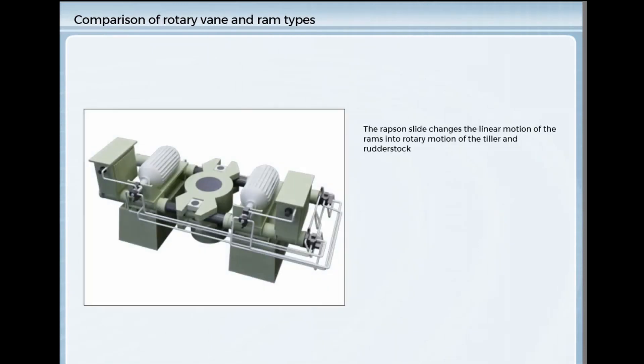In the ram type, the piston or ram is connected to the tiller, often through a Rapson slide, which changes the straight-line motion of the rams into rotary motion of the tiller and rudder stock. This means that ram type steering gears require more space than rotary vane types, and that the working angle is limited compared with the rotary vane steering gear.